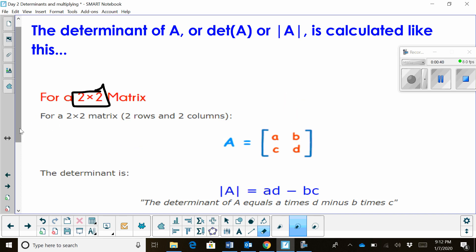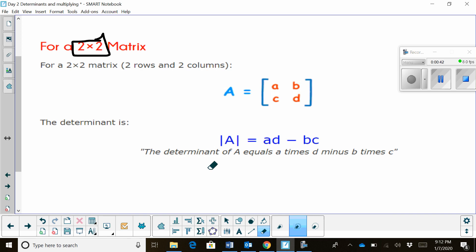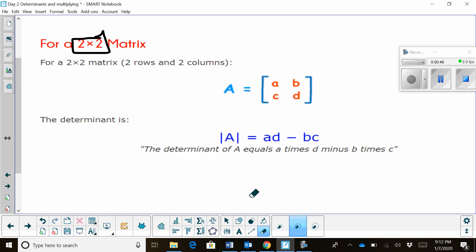Now to find the determinant of that matrix, we are going to use this little formula. You take the top left entry which is A and you multiply it times D. So you multiply the diagonal AD. And then you subtract the product of B times C, which is the top right entry times the bottom left entry.